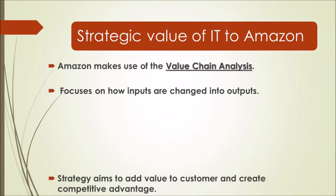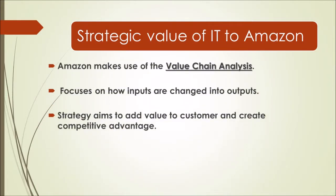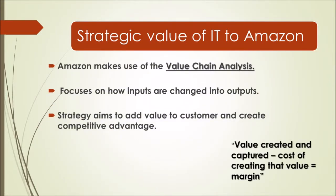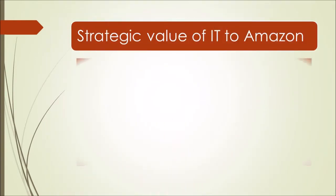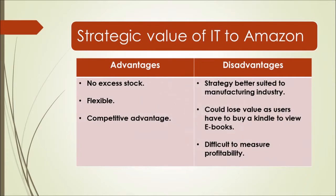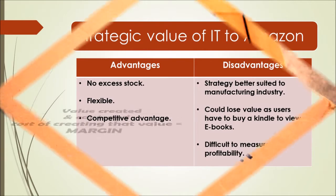Amazon has chosen the value chain analysis by Michael E. Porter. This value chain focuses on systems and how inputs are changed into outputs purchased by consumers. The aim of this model is to identify processes in which the firm can add value for the customer and create a competitive advantage for itself, with a cost advantage or product differentiation. The value created and captured, take away the cost of creating that value, equals the margin.